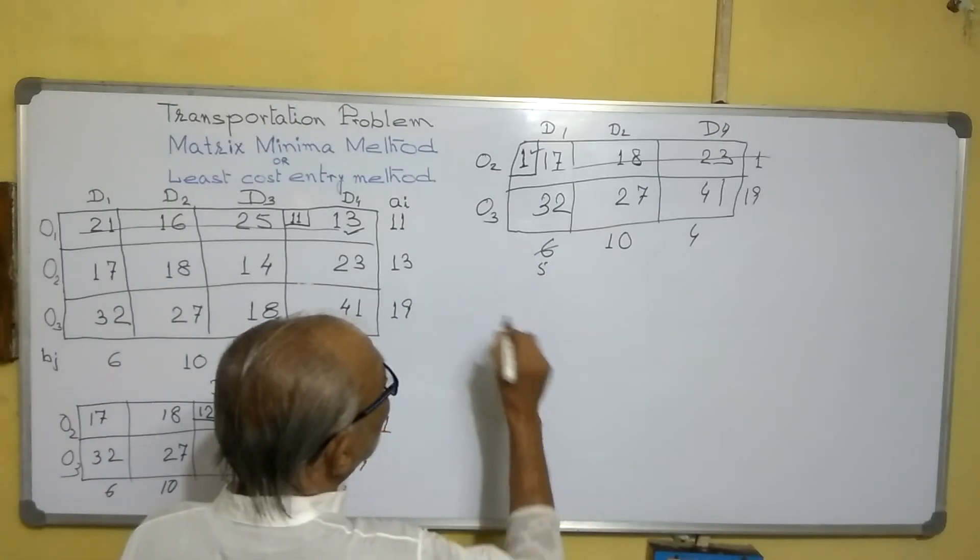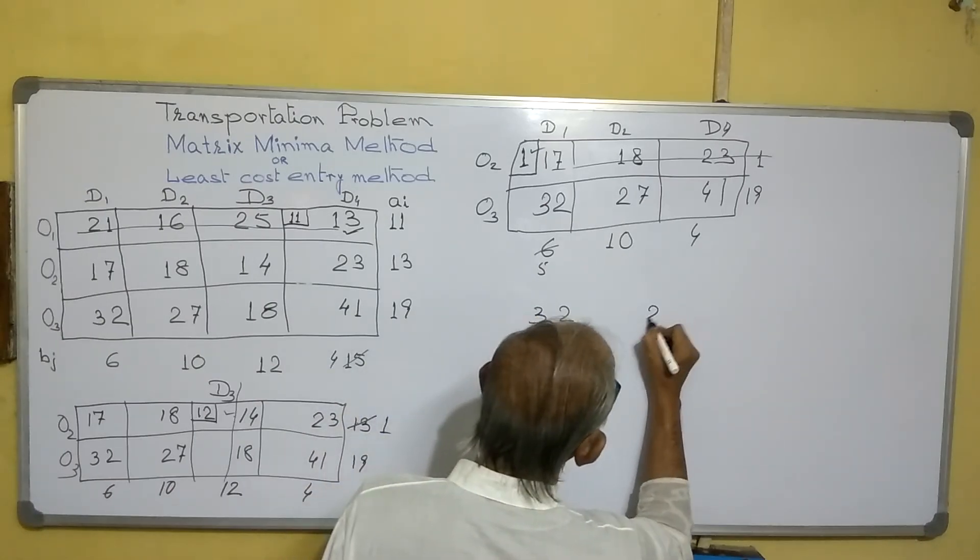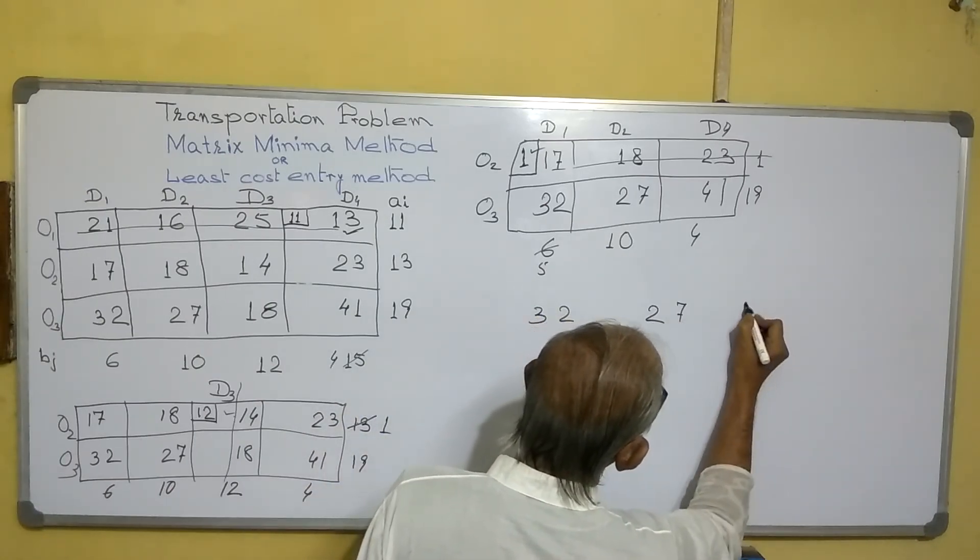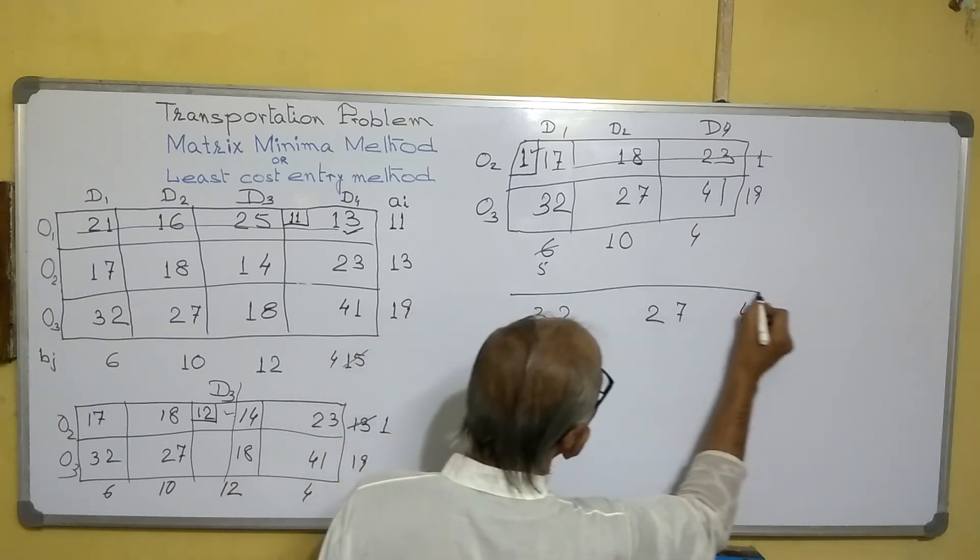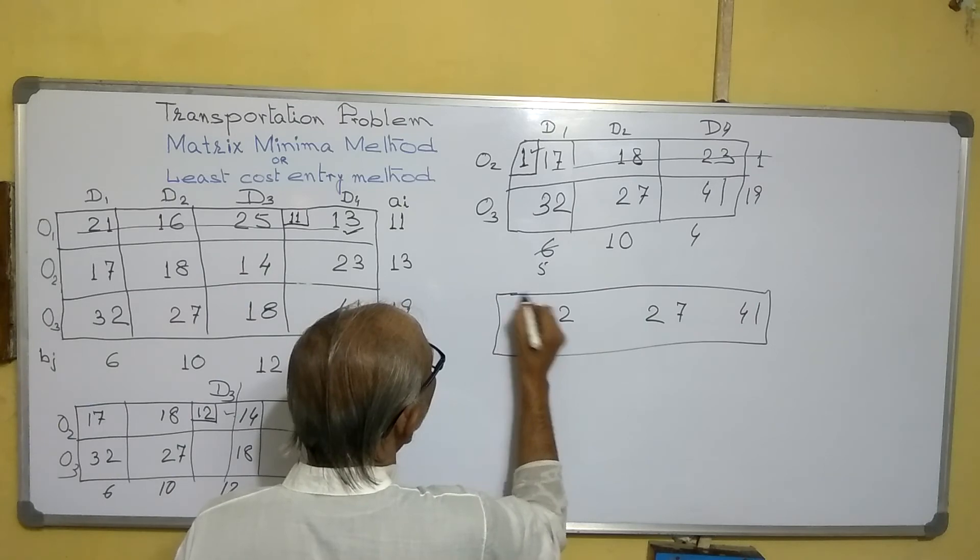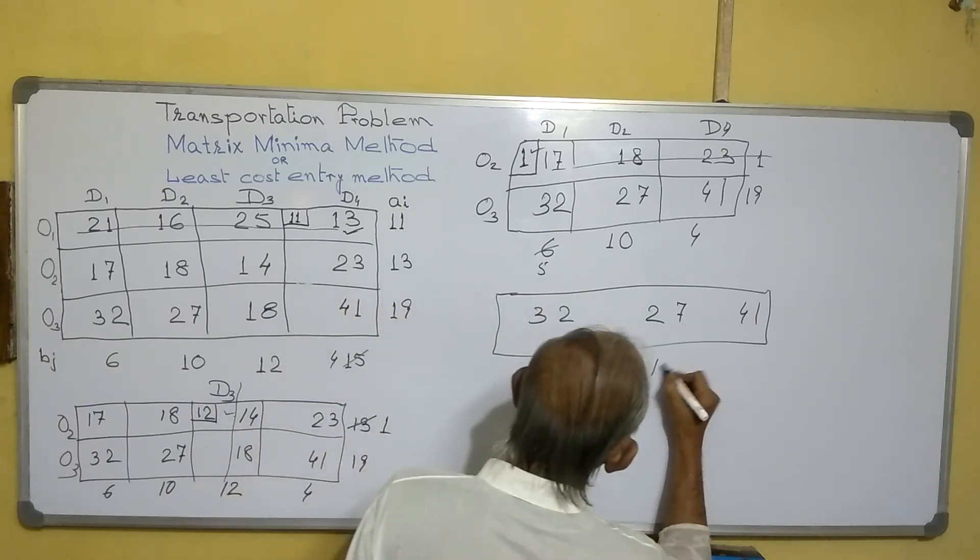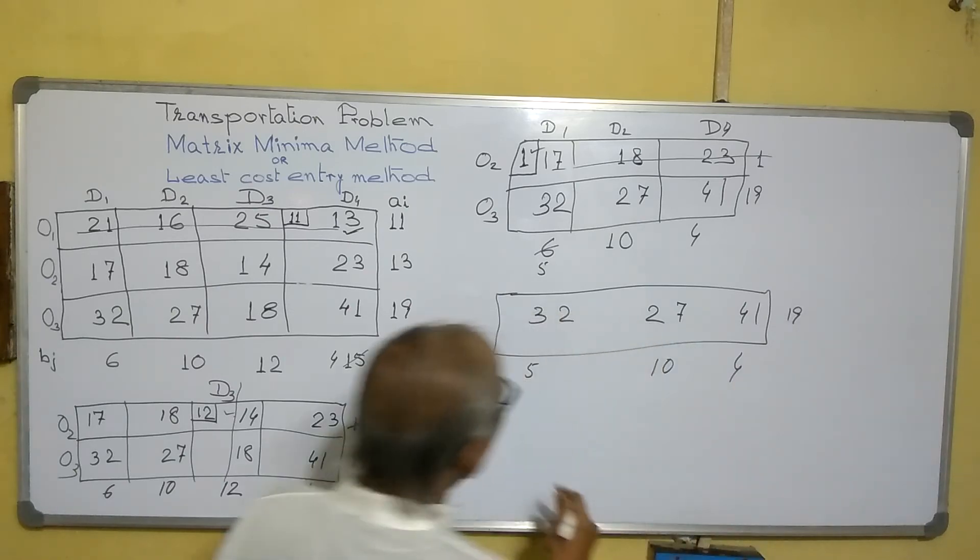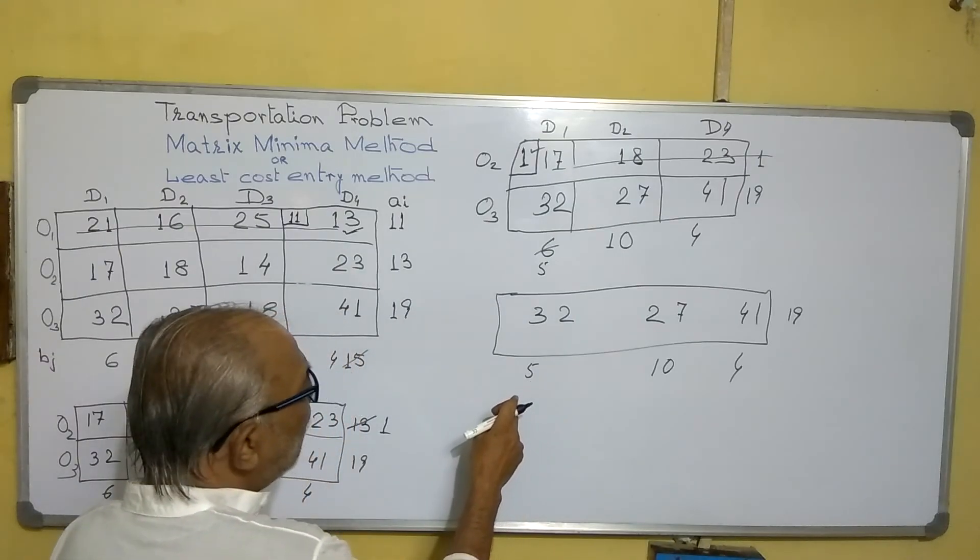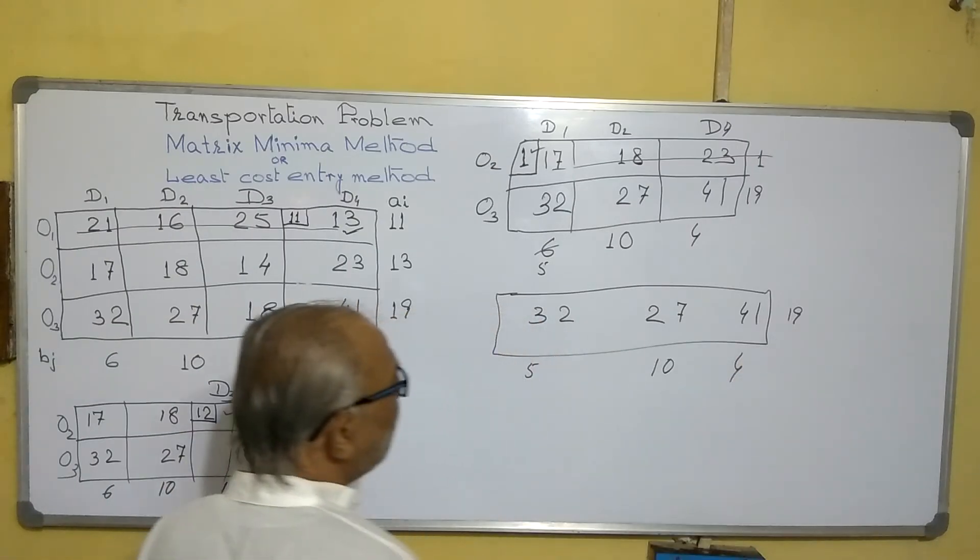Now what remains? It's 32, 27, 41. And the only thing that remains is this one. So here it is 5, 10, 4. Here it is 19. Check it: total requirement is 15 plus 4 is 19, and total available is also 19.